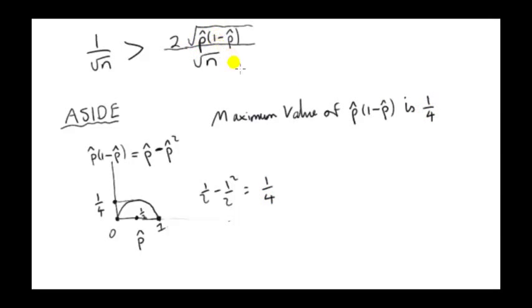We are interested in taking the maximum possible value of this quantity. So we have the maximum margin of error and the most conservative estimate. We just plug a quarter into this thing here. We have the square root of a quarter, which is a half. Two times a half is one, so we end up with one over root n.